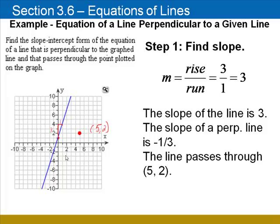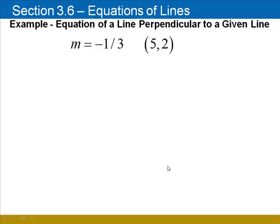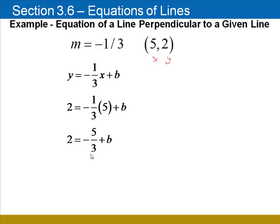So let's find the equation of a line whose slope is negative 1 third, that passes through the point (5, 2). Begin by inserting negative 1 third for m in the slope-intercept form. Now I'll substitute 5 for x and 2 for y. Negative 1 third times 5 is negative 5 thirds. To solve this equation, I need to add 5 thirds to both sides of the equation, which will give me this.